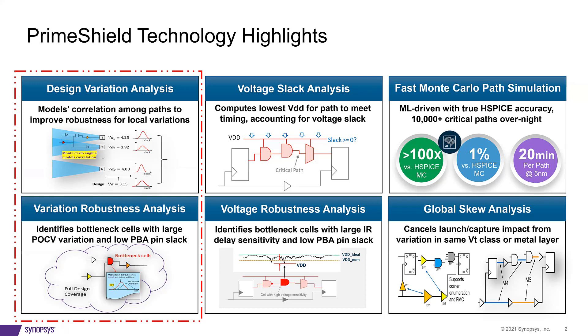Both DVA and variation robustness features target weak cells in timing critical paths. A timing critical weak cell simply means a cell having a large POCV variation and high probability to cause timing failure due to insufficient PBA pin slack. These bottleneck cells are typically 1% of the design and we perform targeted ECO on these top cells, which improves overall design robustness without impacting power and area.